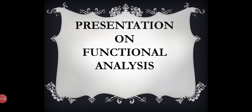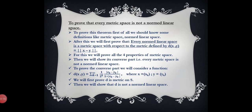Hello everyone, this is Bhavna Khatri, and today I'm going to teach you a theorem of functional analysis. The theorem is to prove that every metric space is not a normed linear space. To prove this theorem, we should first know some definitions — what is a metric space, what is a normed linear space — and after gaining these definitions we will prove that every normed linear space is a metric space with respect to the metric defined by d(x, y) = ‖x − y‖. To prove this, we will first prove all four properties of metric space.